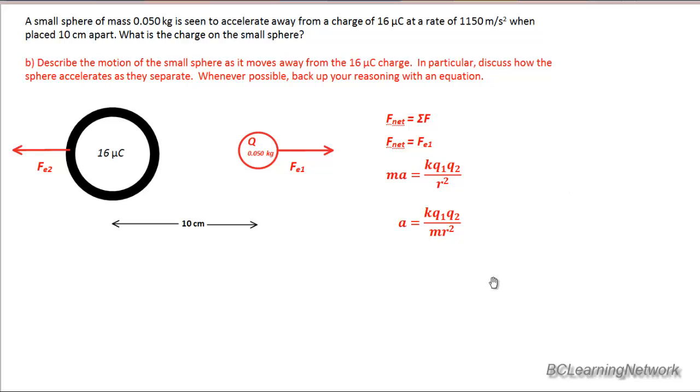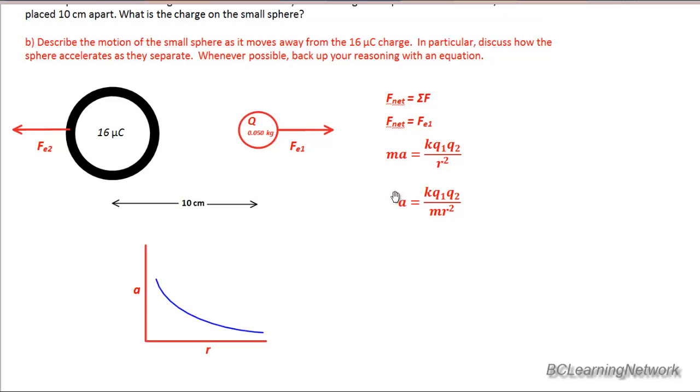What would the graph look like if I made a graph of acceleration versus r? So we see that since acceleration is proportional to 1 over r squared, I'll get this inverse relationship on my graph. As r gets bigger and bigger and bigger, the acceleration continues to get smaller and smaller and smaller, always positive.